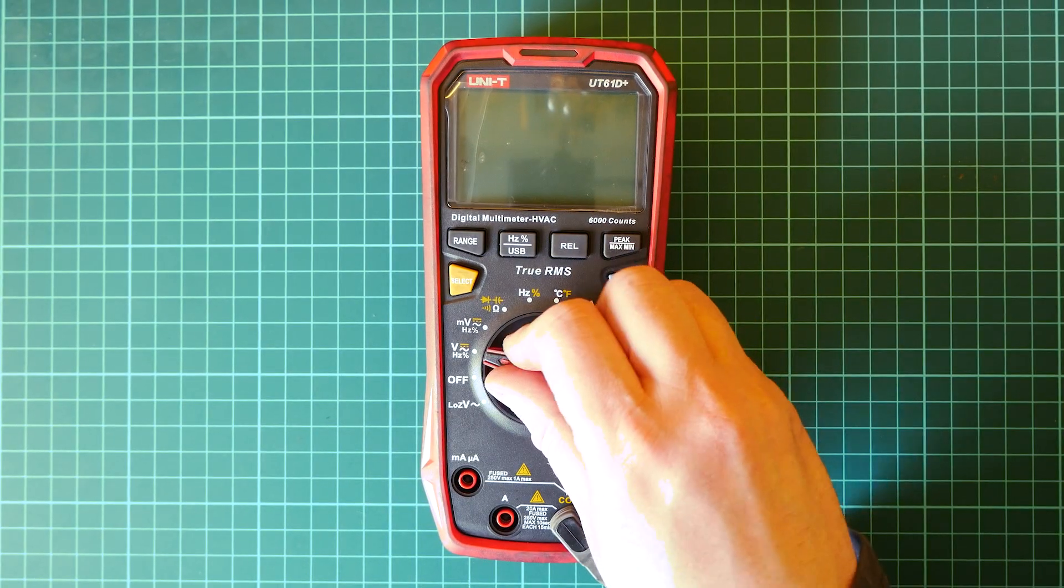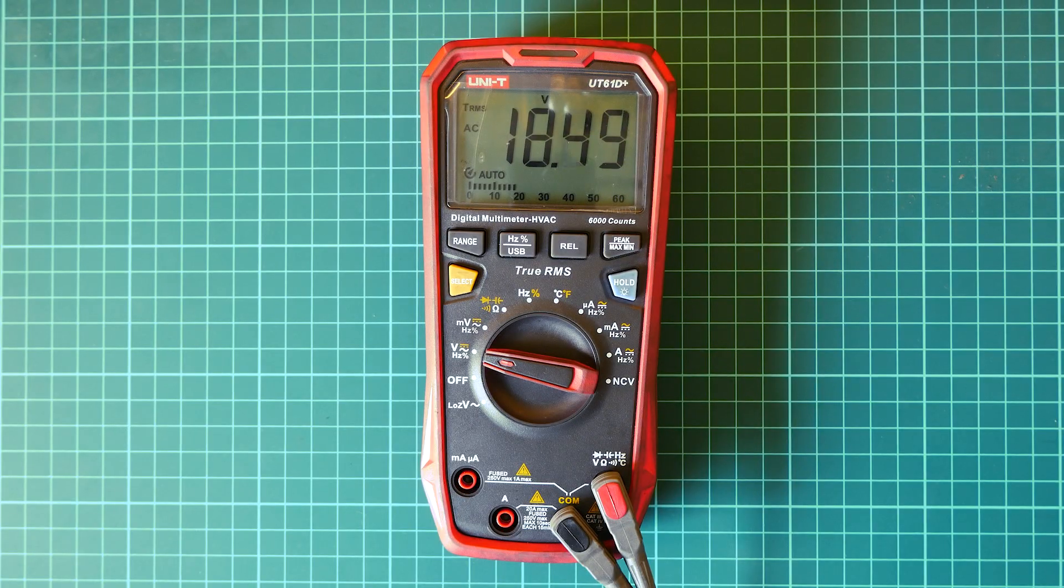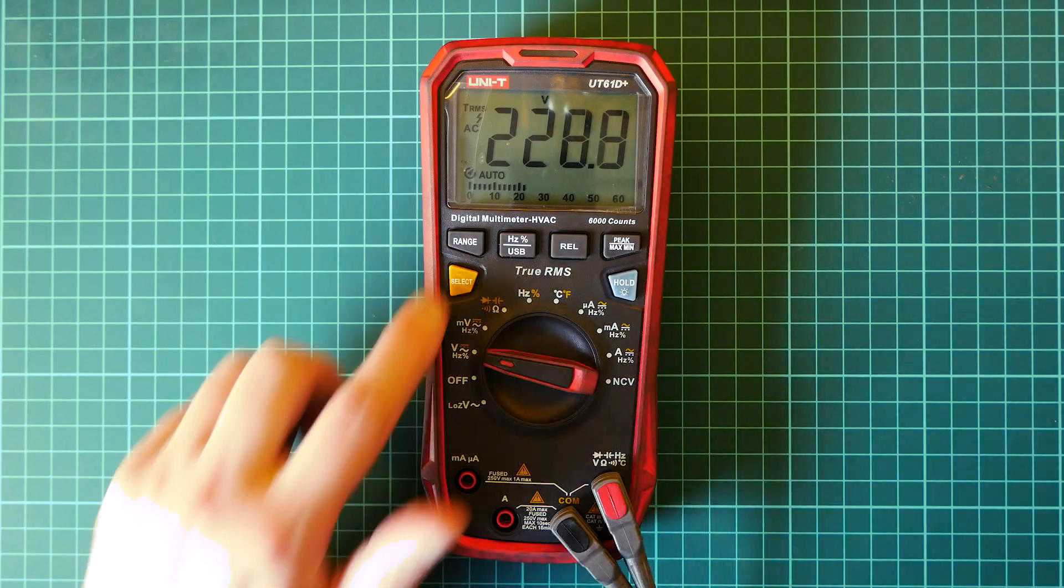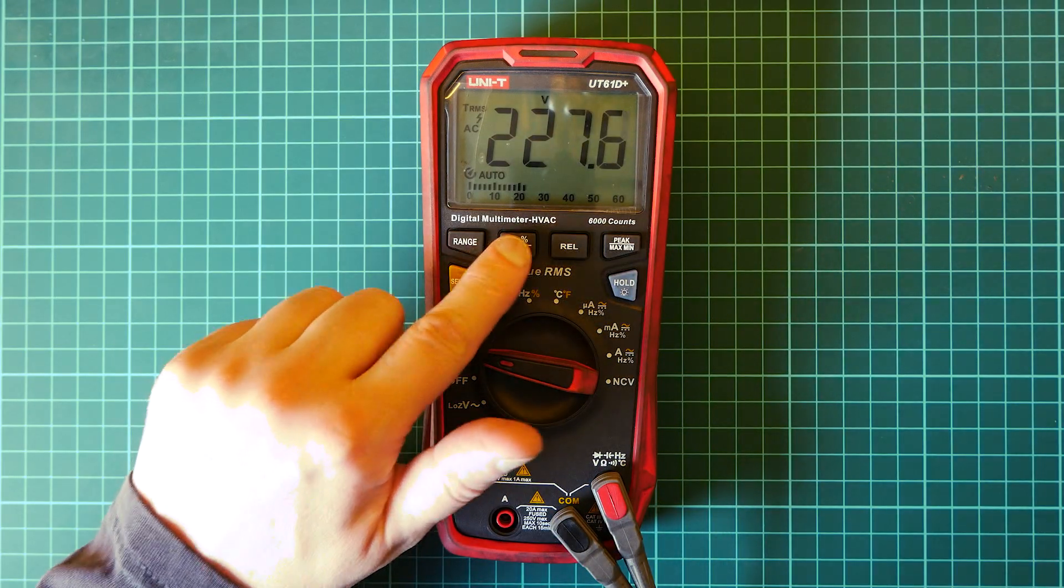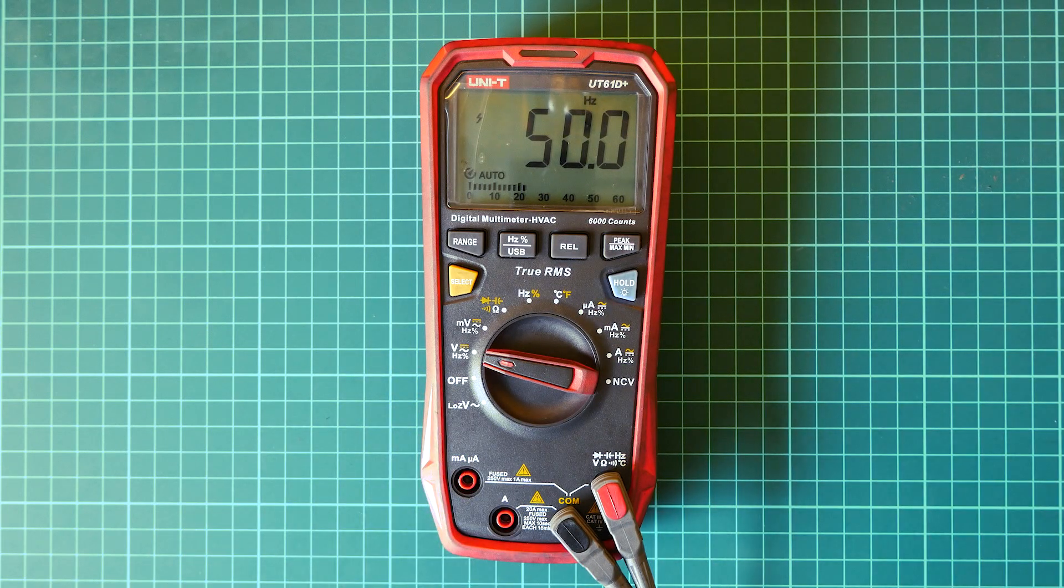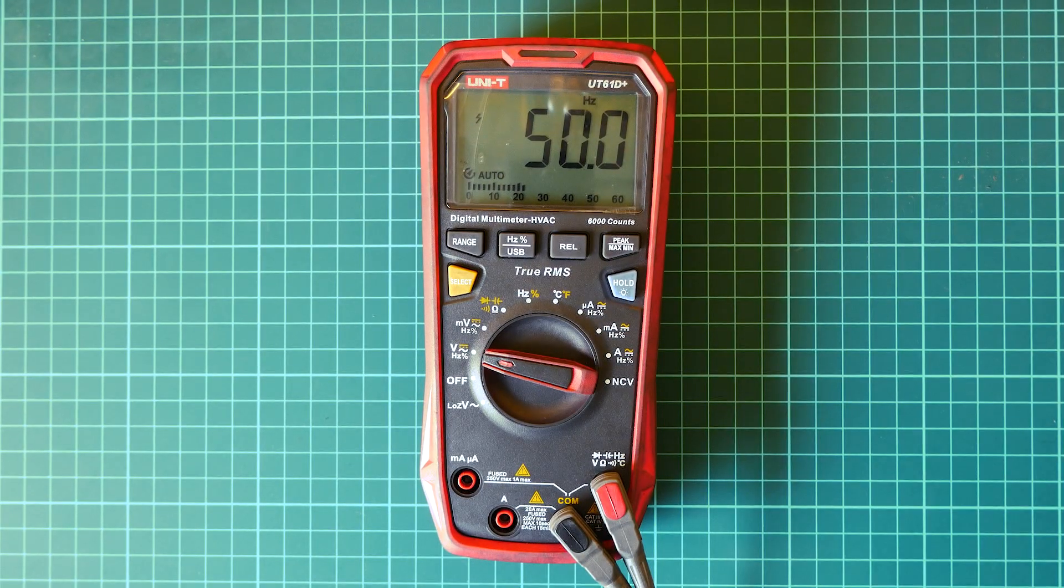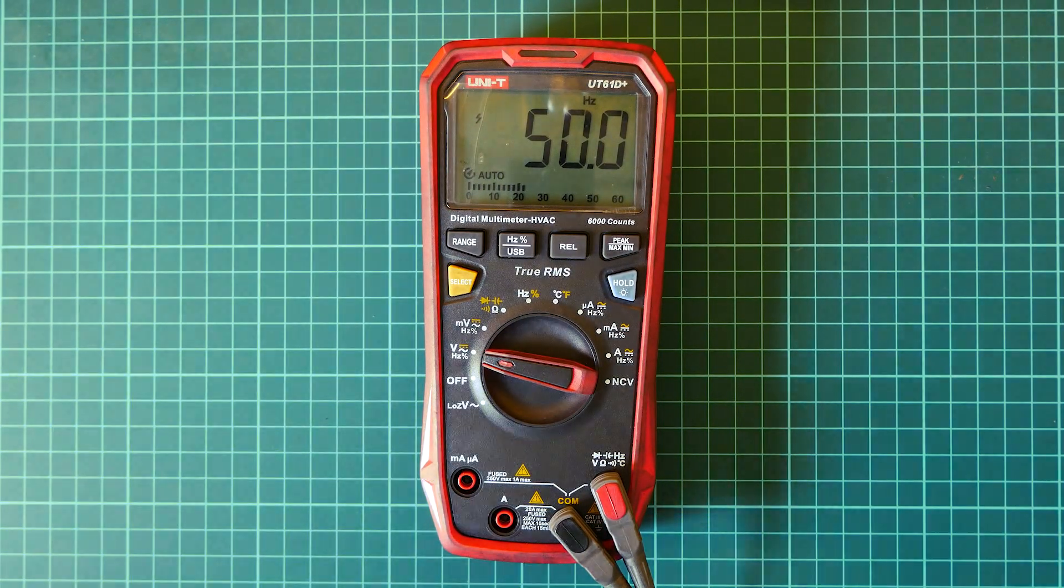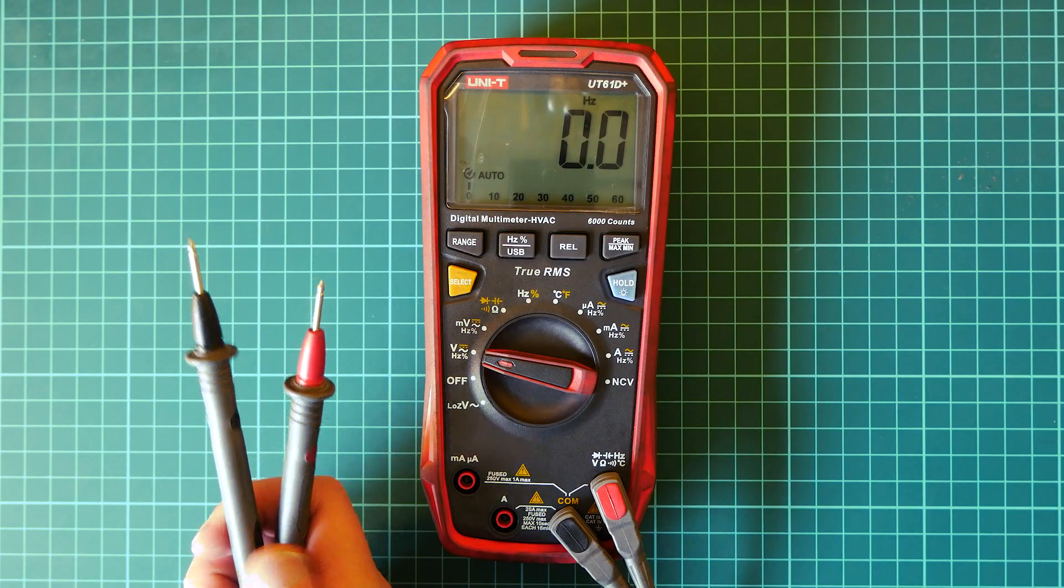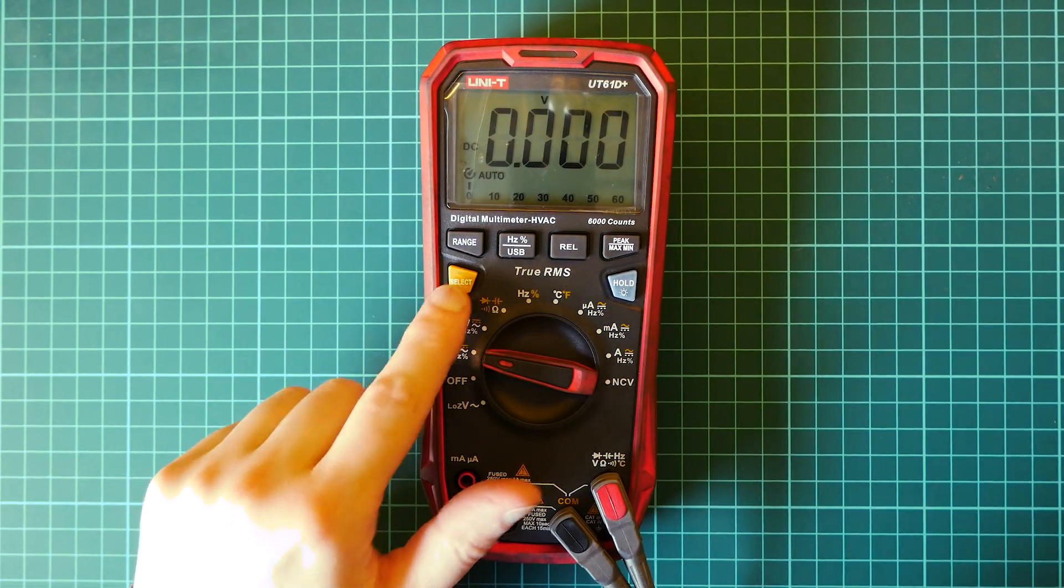Now obviously you can measure AC voltage with it, so it shows 227 AC. You can check frequency, so that is correct. We have in Europe 50 hertz. But when I disconnect the leads it takes quite a long time to refresh. I don't know why.